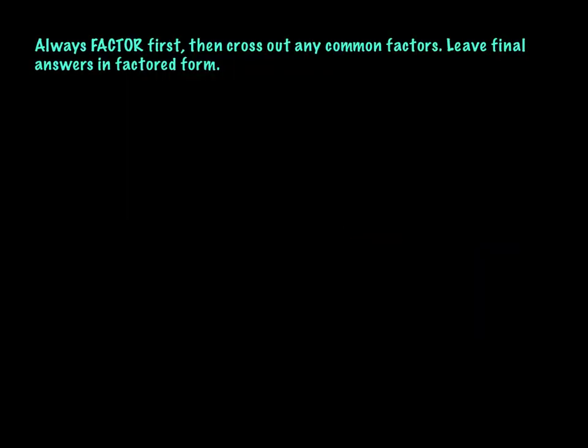The rules for simplifying these problems: always factor first. Always — you have to factor first. Then cross out any common factors. Do not cross out through things; we cannot cross out through addition or subtraction. Then leave your final answers in factored form. I don't want to see everything foiled out and multiplied out — that's ugly and not simplified. So let's do some example problems now.